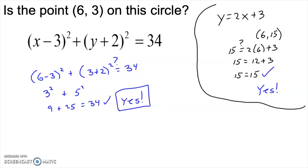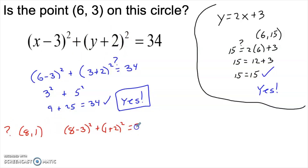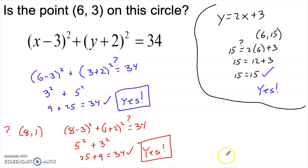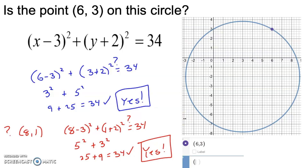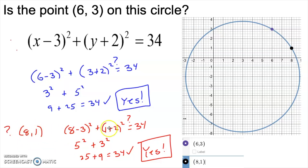Could you think of another point on the circle? We need values that give us 25 and 9 when plugged in. If x = 8, then 8 minus 3 = 5, giving 25. We need the y term to give 9, so y = 1 works. Plugging in (8, 1) again gives 34 = 34. Yes, (8, 1) is on the circle. Here's the graph — you can see both (6, 3) and (8, 1) land right on the circle.